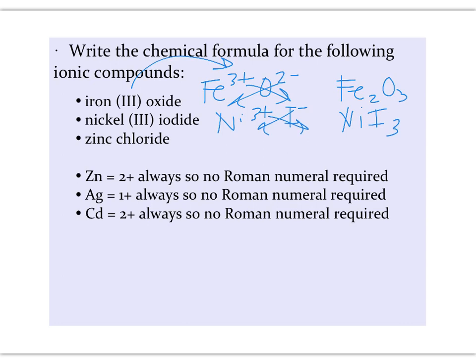Now zinc is a transition metal, but it has only one possible charge, and so you won't see a Roman numeral. You are responsible for knowing the charge on zinc, along with the charge on silver and the charge on cadmium. Those are also transition metals, but have only one charge. And so they won't have a Roman numeral. You need to know what those charges are. So zinc is always a plus 2, and chlorine is a minus 1. Criss-cross those charges. ZnCl2.